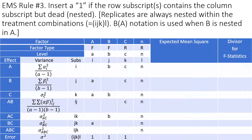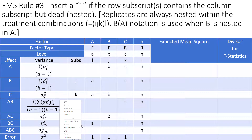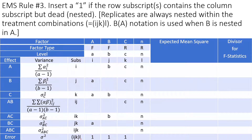The next rule is for the dead subscript. All replicates and all experimental units are nested within the treatment combinations. Therefore, in the last row, the experimental error subscript is IKL — these are dead subscripts. If the dead subscript matches the column subscript, then you type 1 in that cell.